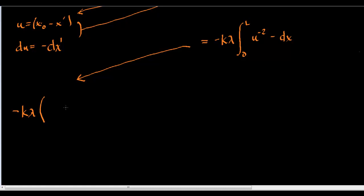So, I've got negative k lambda times, now, it's actually not 1 over 2, right? It's negative 1 over negative 2. Negative 1 over u.